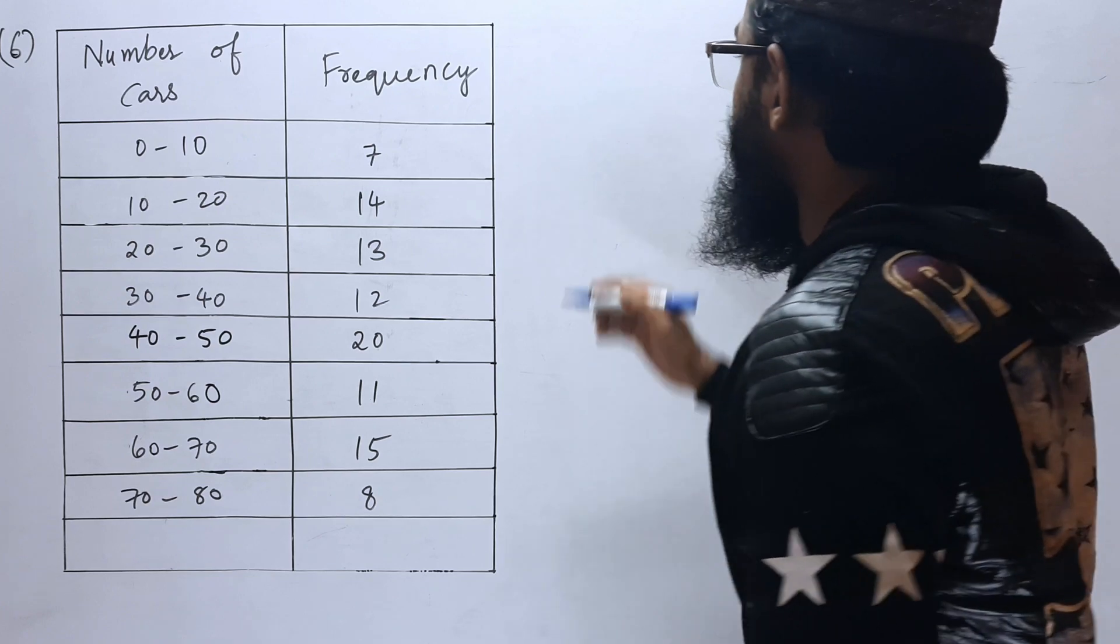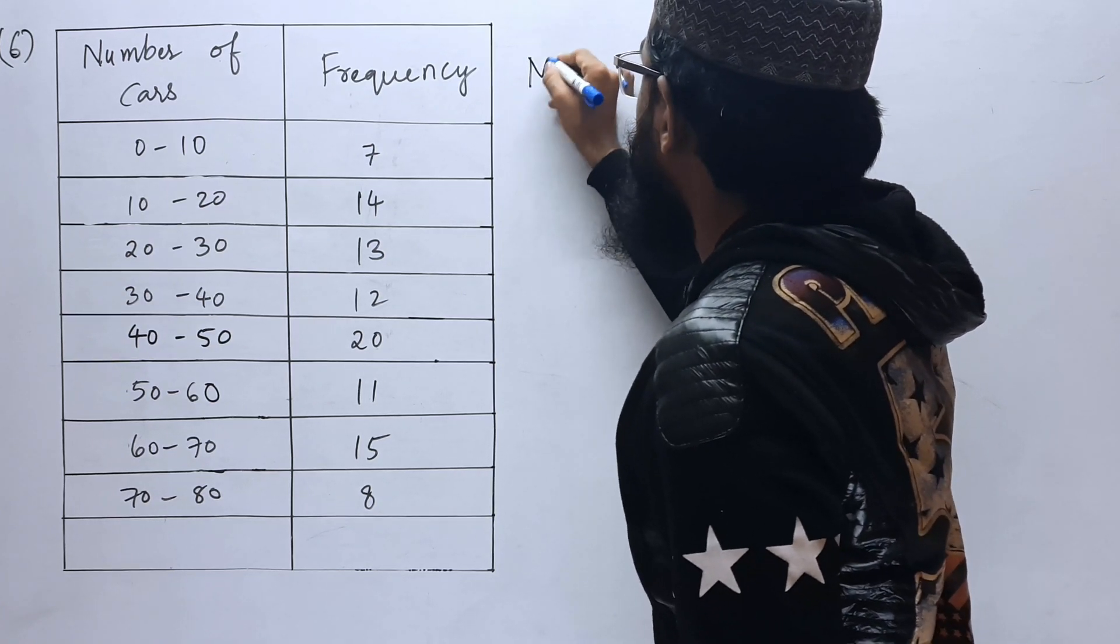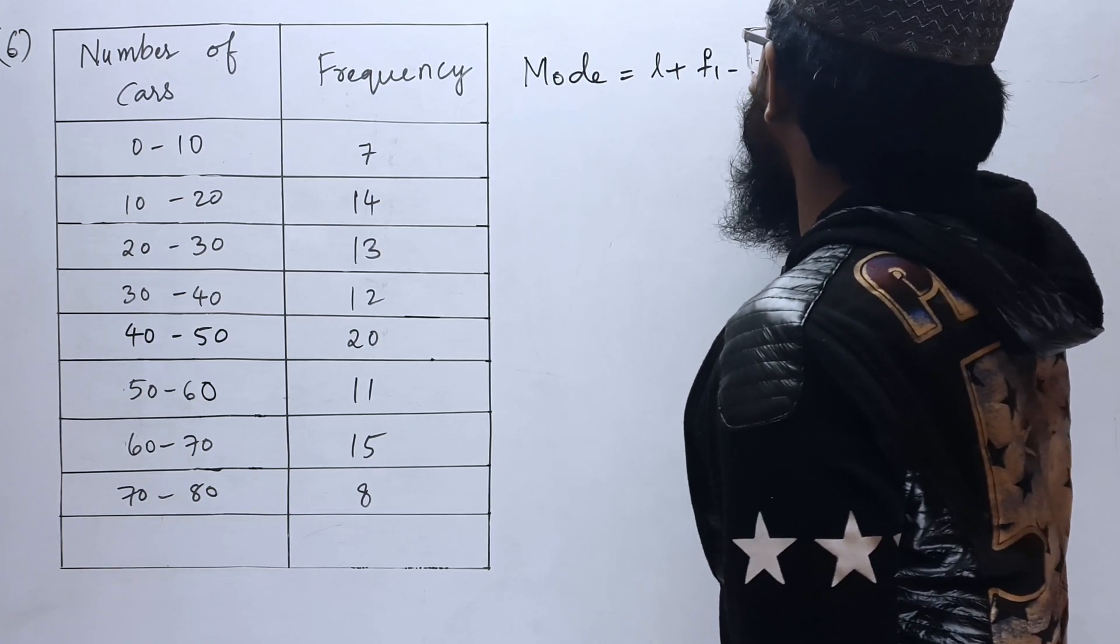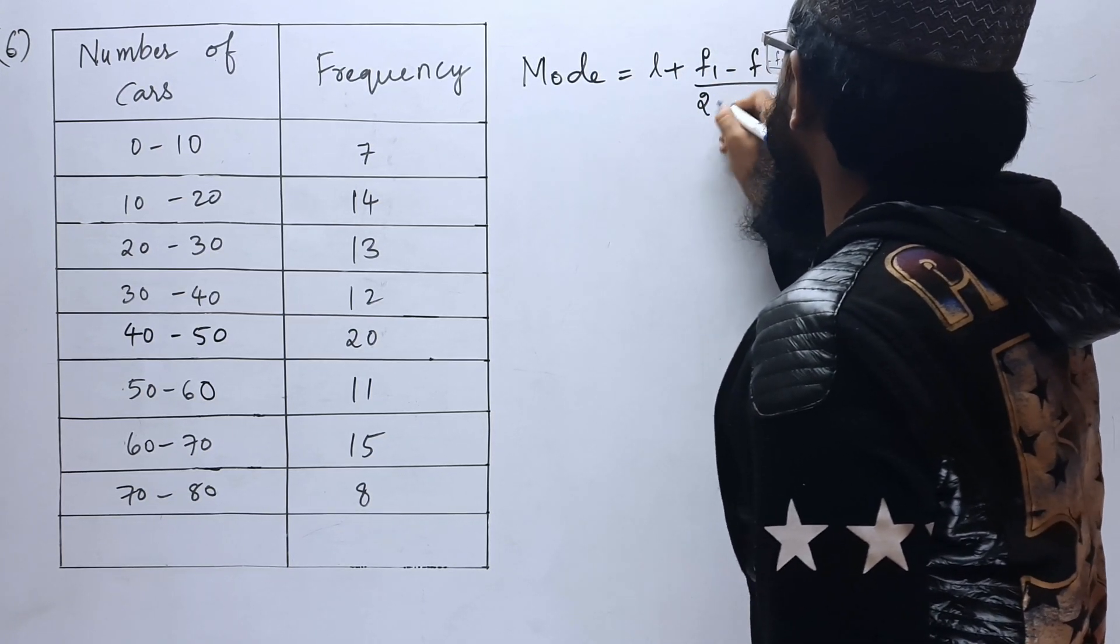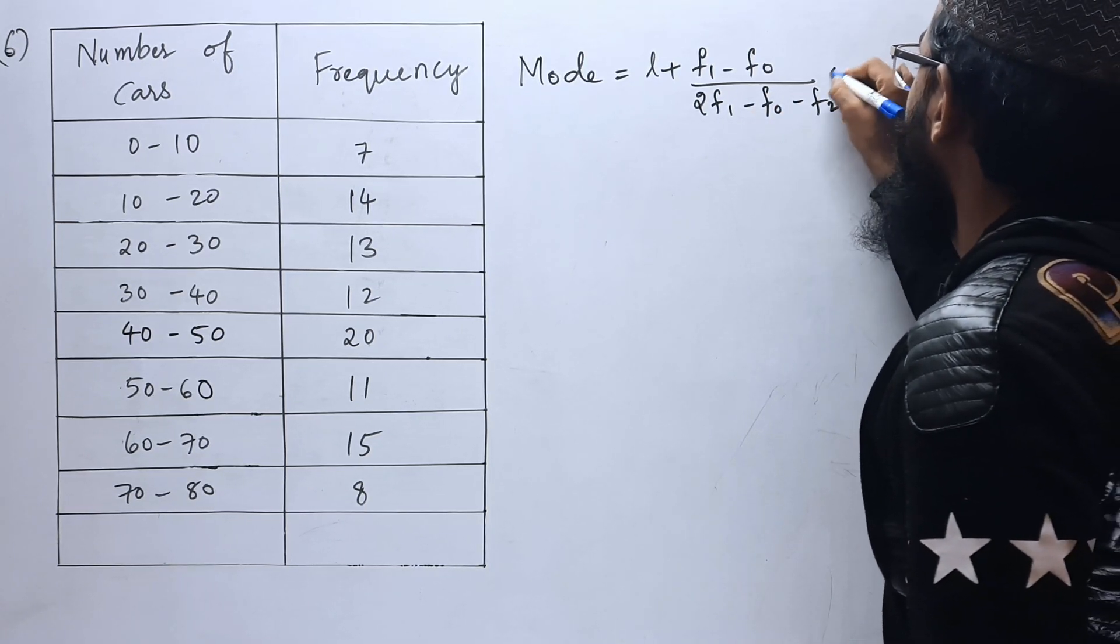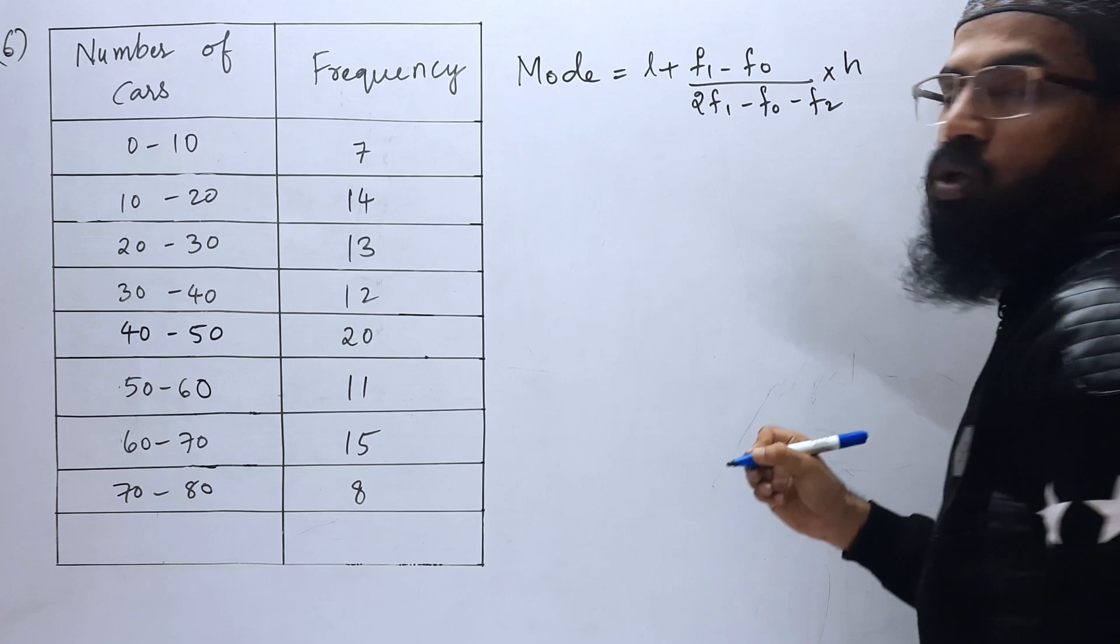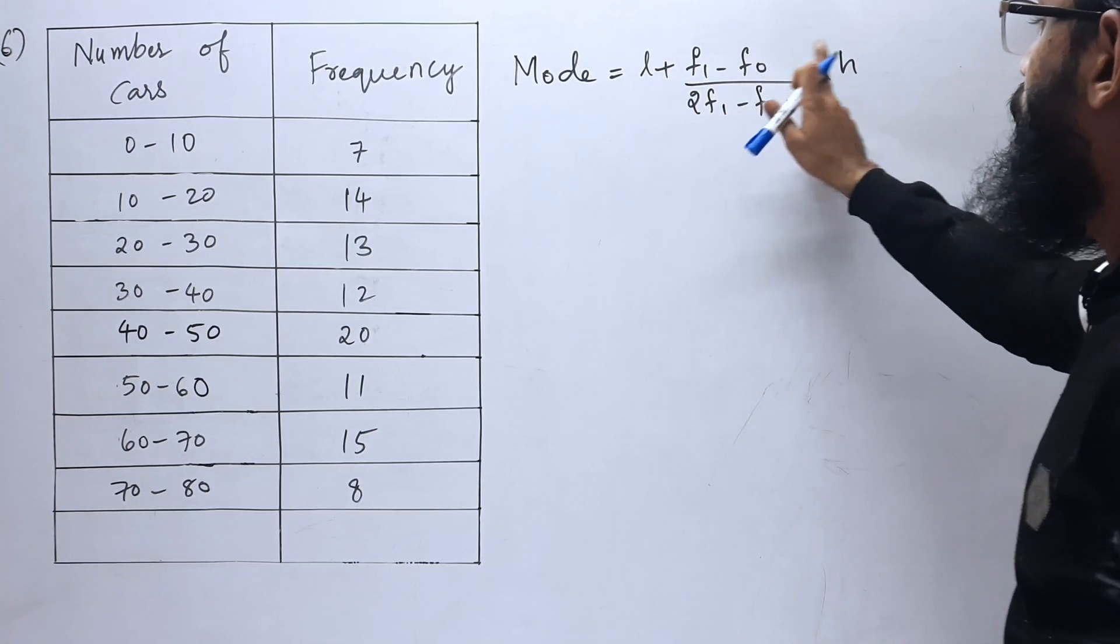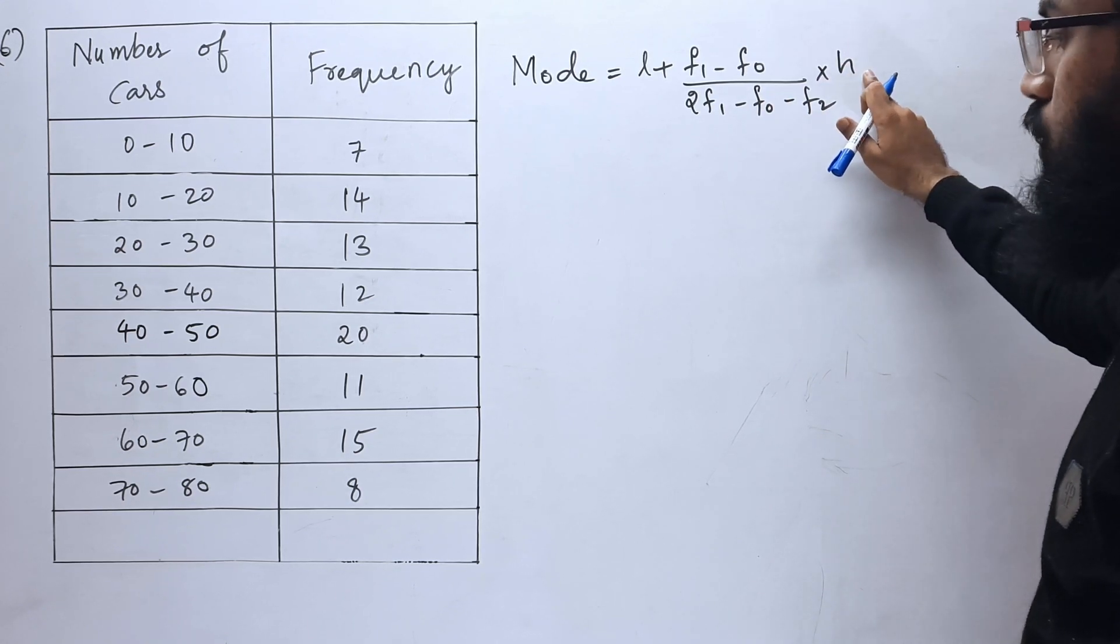For that, let us write the formula for mode. Mode is equals to L plus F1 minus F0 by 2F1 minus F0 minus F2 into H. Now we will point out each term like L, F1, F0, F2, and H.